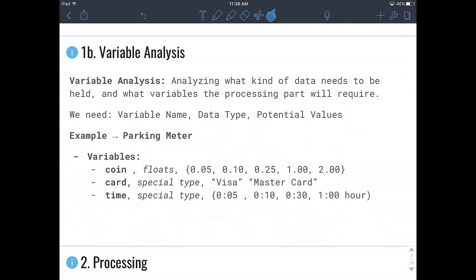Whereas for cards, we don't really have a data type for cards. So we might want to create a special data type and we can have the values of Visa or MasterCard. Then we have time, which is also another special type where we can take the values of either 5 minute, 10 minute, 30 minutes or even an hour. And it will allow the user to mix and match so that they will get the right amount of time that they need.